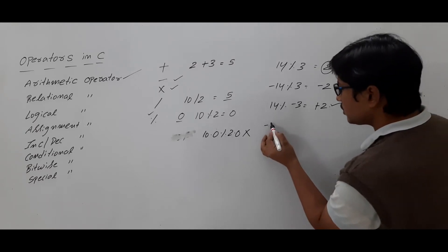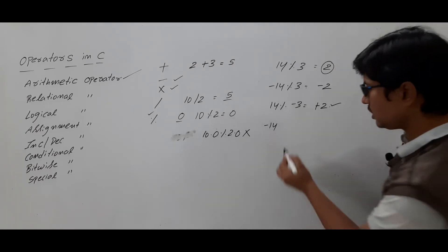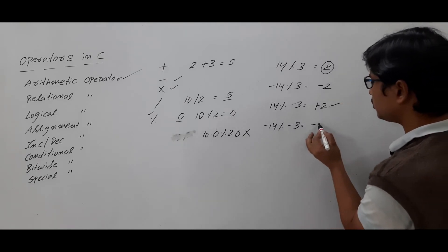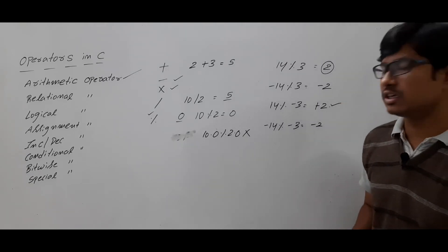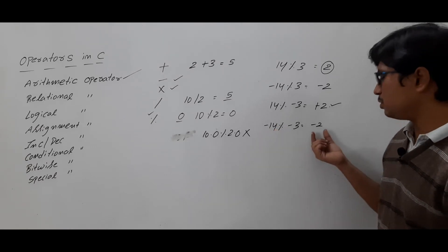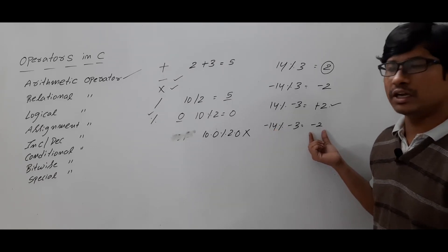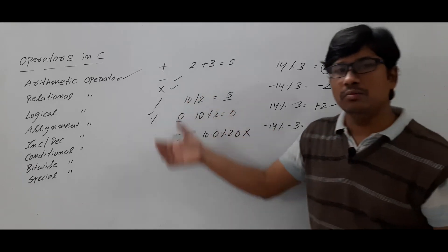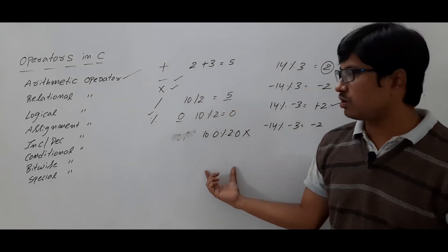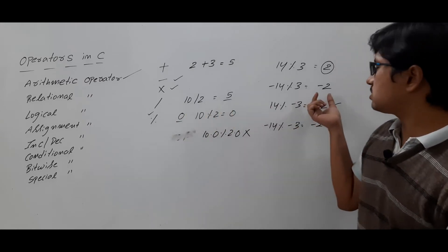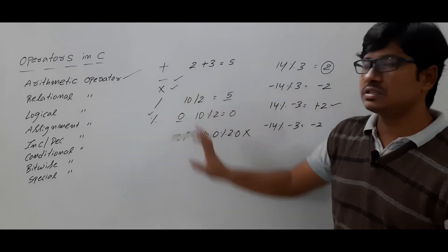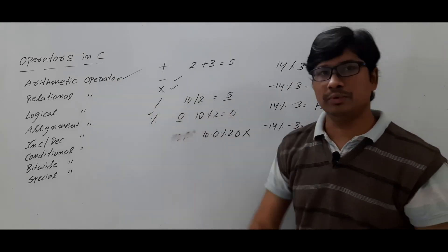Similarly, if you have minus 14 modulus minus 3, it will also give minus 2. Lot of people will think it will give plus, but the numerator has a negative symbol so the result will also be negative. The modulus operator cannot be used for real constants and the result sign will depend on the sign of the numerator. This is about the arithmetic operators.